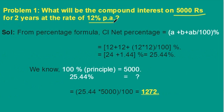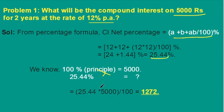At the rate of 12% per annum, we have to calculate the compound interest. Always we assume 100% equal to the principal amount, that is 5000 rupees. The compound interest percentage can be calculated using the percentage method: A plus B plus AB by 100. For 2 years at 12%, we get 25.44% as the net percentage. By cross multiplication, 100% equal to 5000, so 25.44% equals compound interest of 1272 rupees.